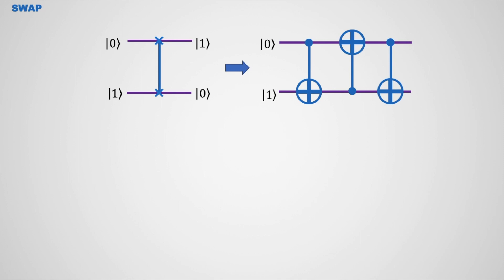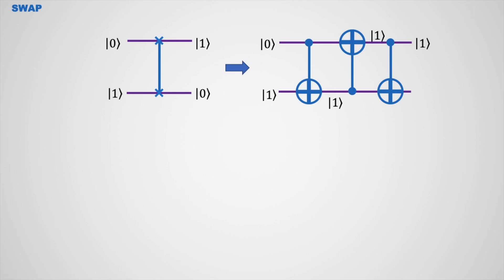If the input is |0⟩ and |1⟩, and the control bit is |0⟩, then there is no change in the target bit, so the output of this gate is |0⟩ and |1⟩. This control bit is then in |1⟩ state, so this qubit changes its state from |0⟩ to |1⟩. Now the control bit is in |1⟩ state, so this one changes its state from |1⟩ to |0⟩. This is the output.